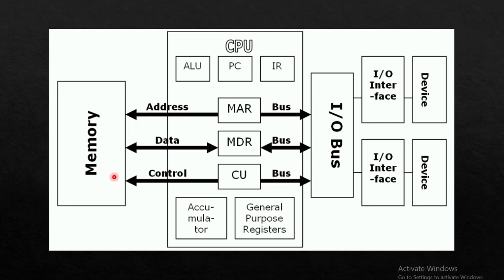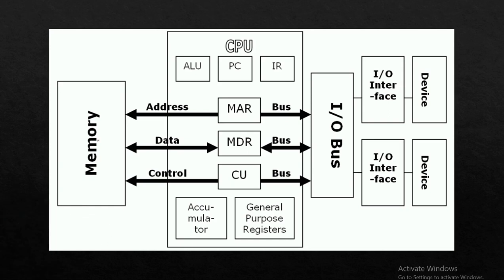In this diagram, the CPU includes input/output devices, memory, buses, and registers. The ALU stands for Arithmetic and Logical Unit. The PC is the program counter. The program counter is a register.